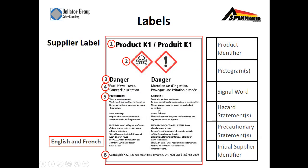Your supplier label is going to include six elements: the product identifier, the pictogram, a signal word identifying the danger, a hazard statement, the precautionary statement, and the initial supplier identifier. Your supplier label must also be available in English and in French.